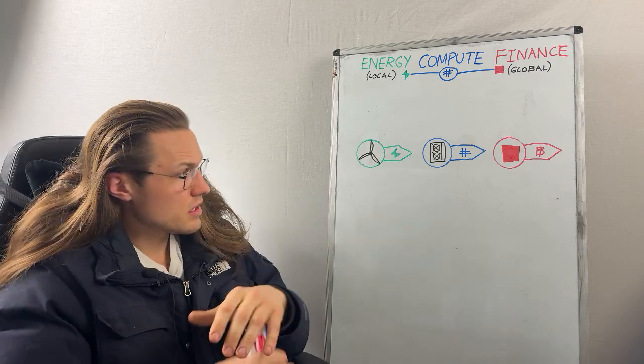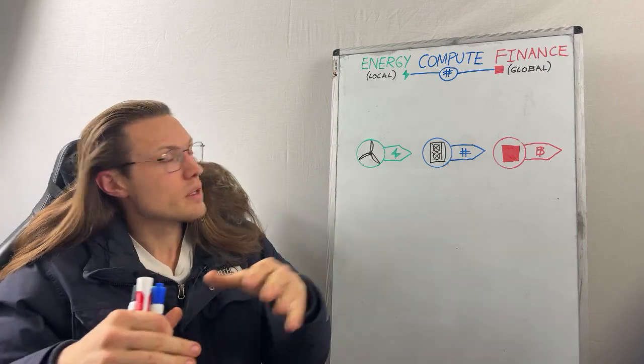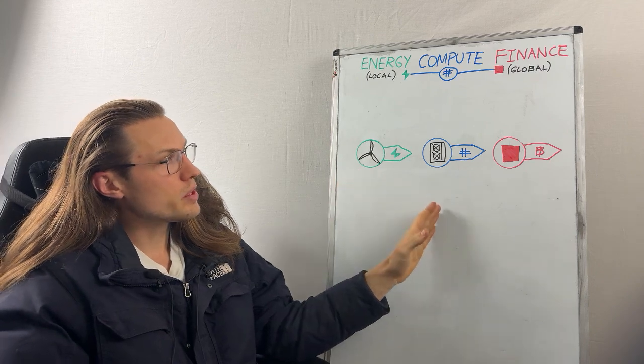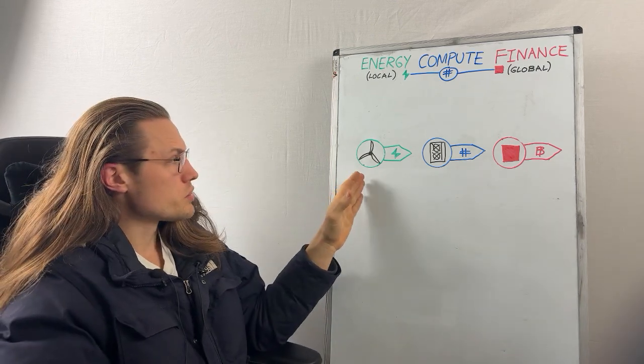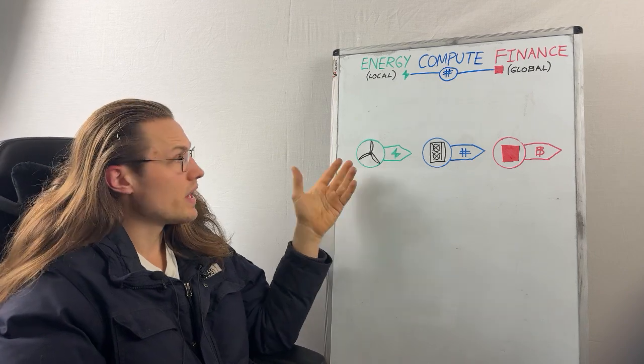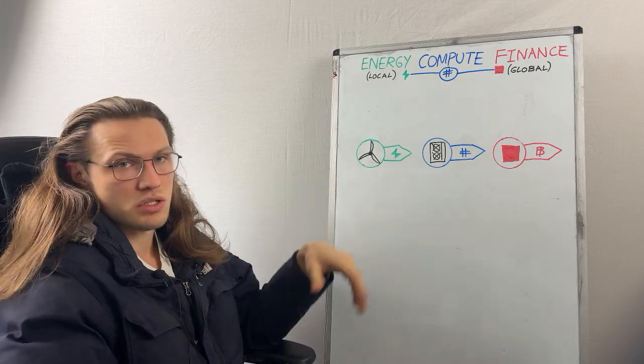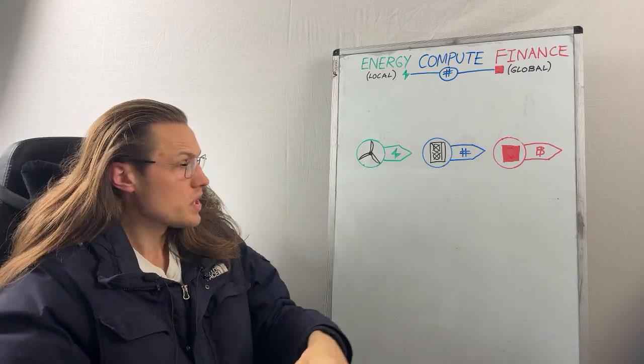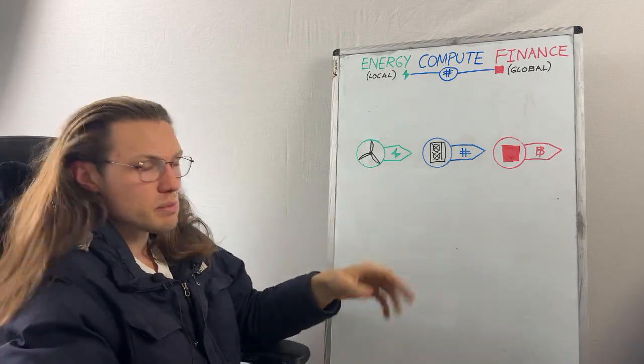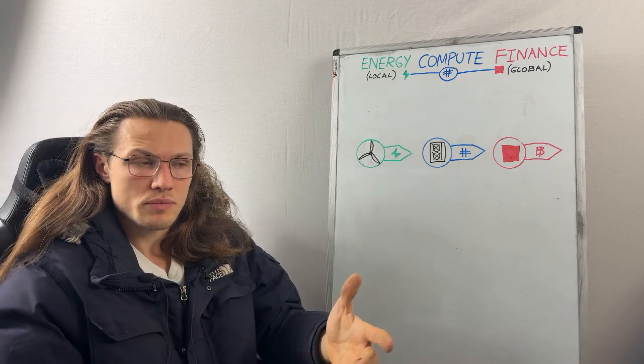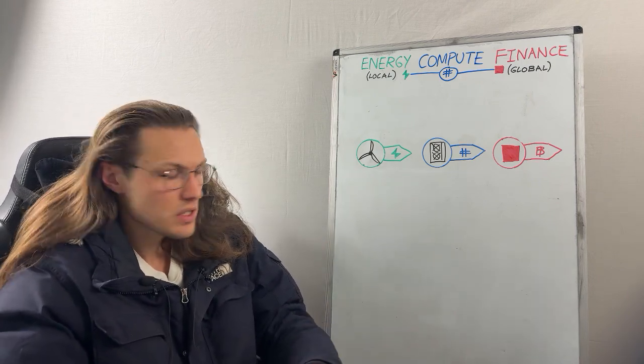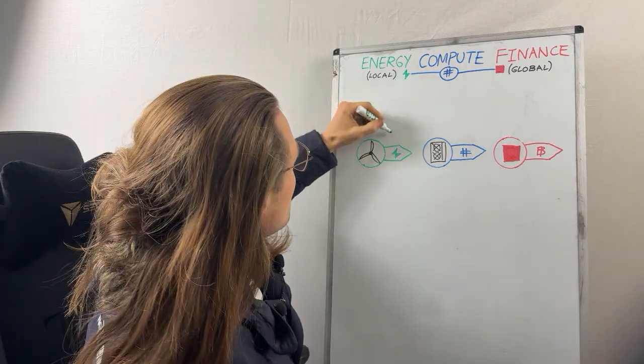And that is exactly the topic of today. The entire Bitcoin network can be extrapolated into three core areas of energy, compute and finance. That is the producer and commodity of energy, energy systems such as solar, wind, hydro, gas, coal. What do they all produce? They all produce the same fungible commodity of electricity and it's of fundamental importance to the 21st century. So let's just put kilowatt hours here.